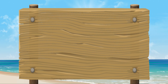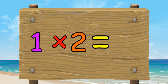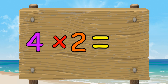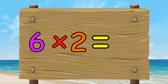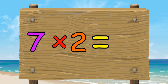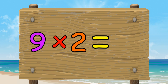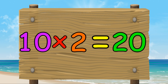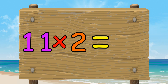Let's do that again. 1 times 2 equals 2. 2 times 2 equals 4. 3 times 2 equals 6. 4 times 2 equals 8. 5 times 2 equals 10. 6 times 2 equals 12. 7 times 2 equals 14. 8 times 2 equals 16. 9 times 2 equals 18. 10 times 2 equals 20. 11 times 2 equals 22.